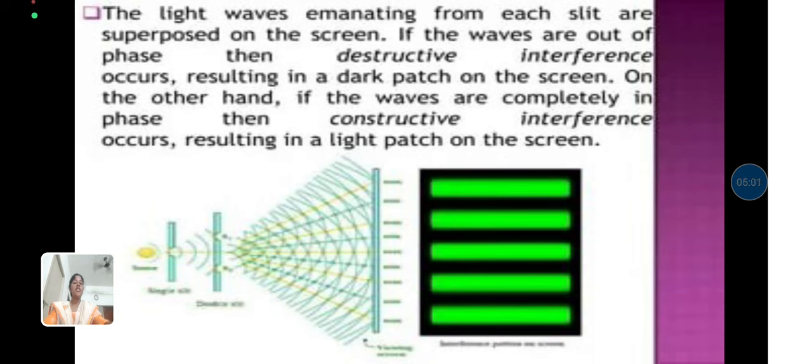The light waves emanating from each slit are superposed on the screen. If the waves are out of phase, in this image we are clearly seeing about the destructive interference and then also the occurrence of the constructive interference. It is also resulting in a dark patch on the screen, known as destructive interference. The bright patch on the screen is known as constructive interference. If the waves are completely in phase, this is also called constructive interference.